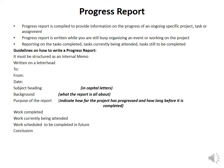Guidelines on how to write a progress report: it must be structured as an internal memo, written on a letterhead. You need to write 'To' and 'From' — it can be to the particular managers or department, from your name or your department. The date must be written in full. Write your subject heading in capital letters. The background covers what the report is all about — for renovations, you would state that you are giving a progress report on the specific ongoing project within your organization. The purpose of the report indicates how far the project has progressed and how long before it is completed.